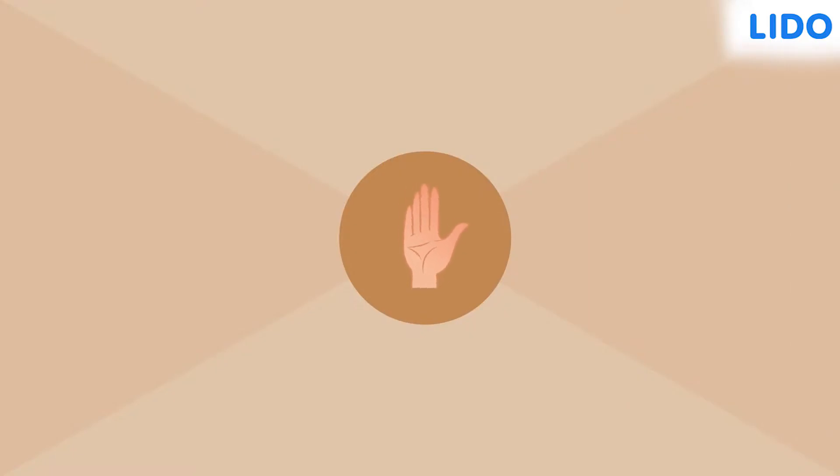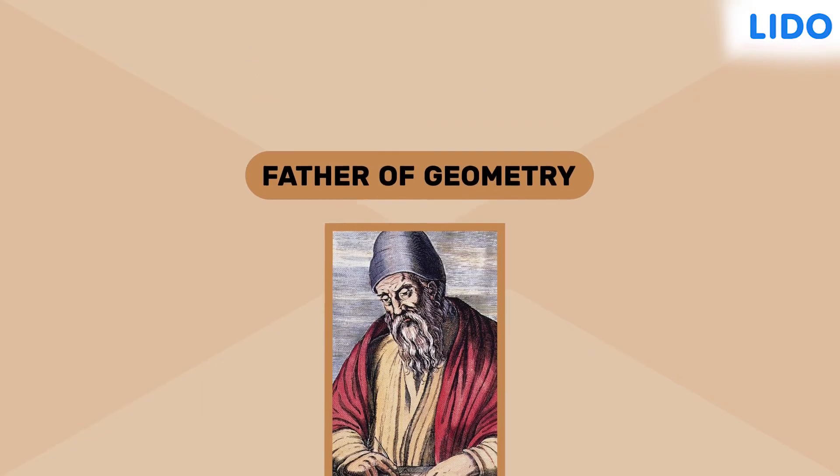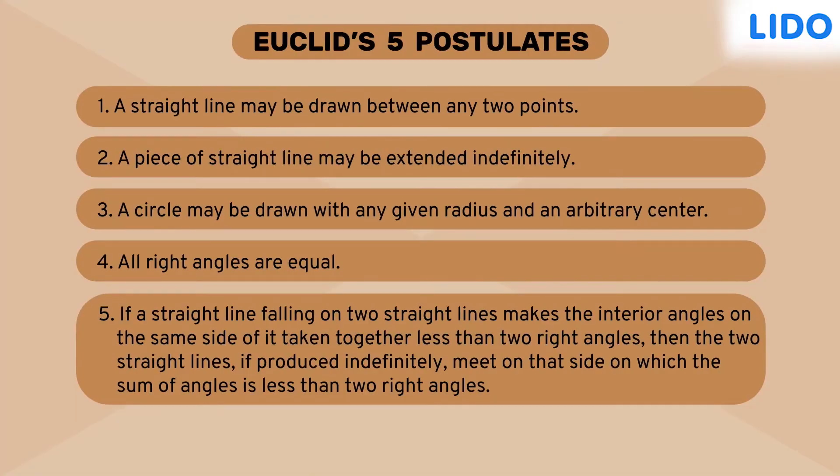Hi everyone, we know Euclid as the father of geometry. He gave many axioms and postulates which are considered to be obvious universal truths and need no proof. Euclid gave five postulates which laid the foundation of present-day geometry.